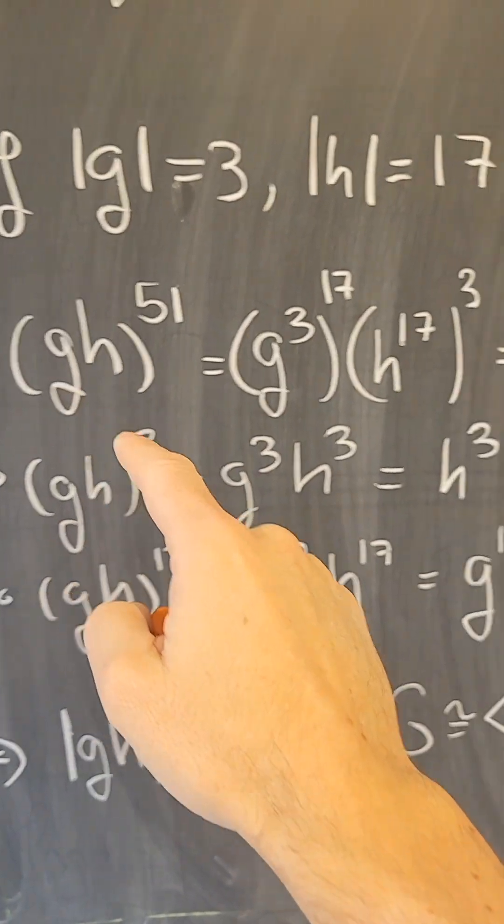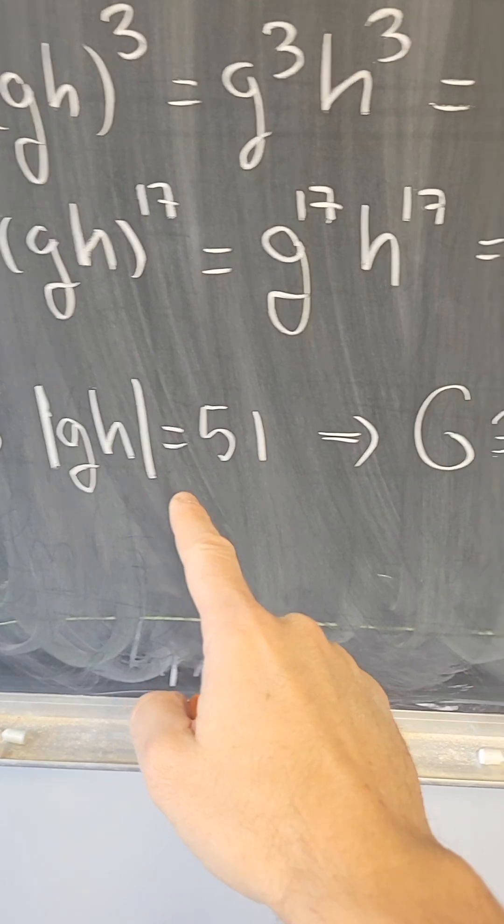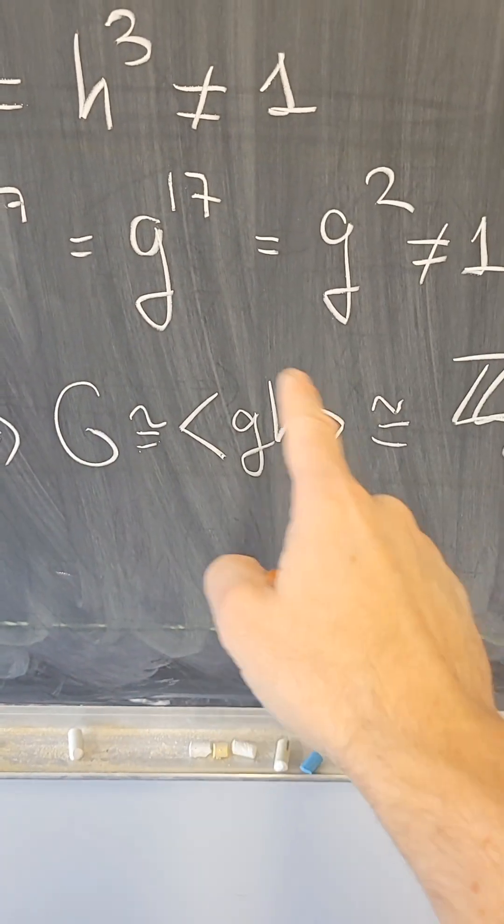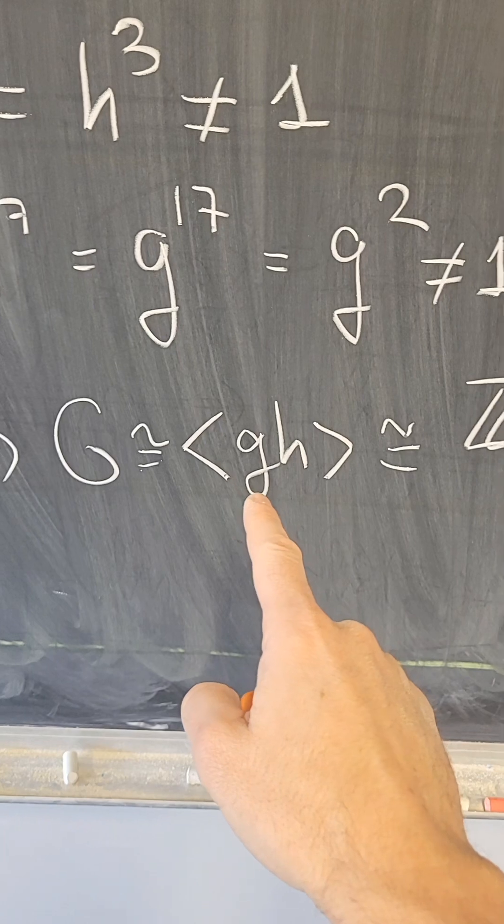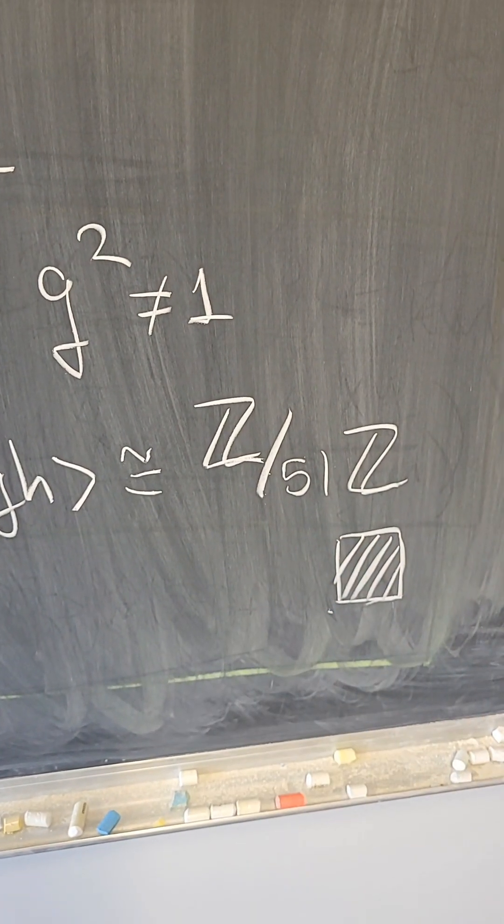So the order of g times h is 51, and therefore G is generated by the element g times h, and therefore G is isomorphic to Z modulo 51.